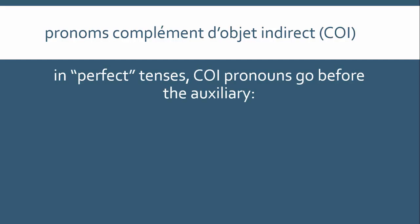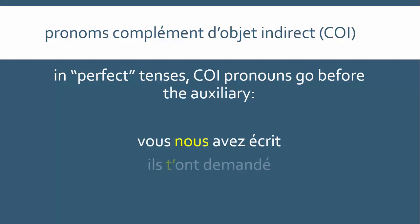In so-called perfect tenses — that is, tenses with an auxiliary verb and a past participle — indirect object pronouns, like direct object pronouns, go before the auxiliary. So: 'vous nous avez écrit' — you have written to us; to write to someone is 'écrire à quelqu'un.' 'Ils t'ont demandé' — they asked you; to ask someone is 'demander à quelqu'un.' Although we can't tell the difference between the second person singular direct and indirect object pronoun here, because 'demander' is followed by 'à,' the 't'' is indeed indirect. And 'on lui a pardonné' — to forgive someone in French is 'pardonner à quelqu'un,' so 'on lui a pardonné' means we forgave him or we forgave her.